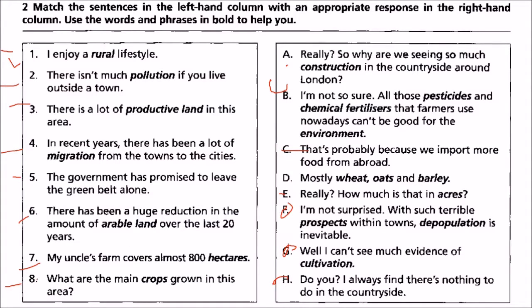Eight: what are the main crops grown in this area? We match it with D — mostly weeds, oats, and barley. Main crops.